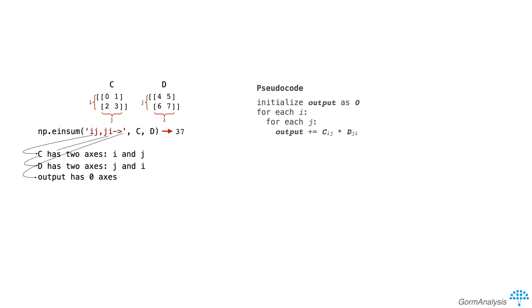Notice that on the surface, this particular Einstein sum is equivalent to doing np.sum(c * d.T). The difference is that einsum only visits each element once, whereas sum(c * d.T) visits each element twice: first when it does the multiplication, and second when it does the sum.